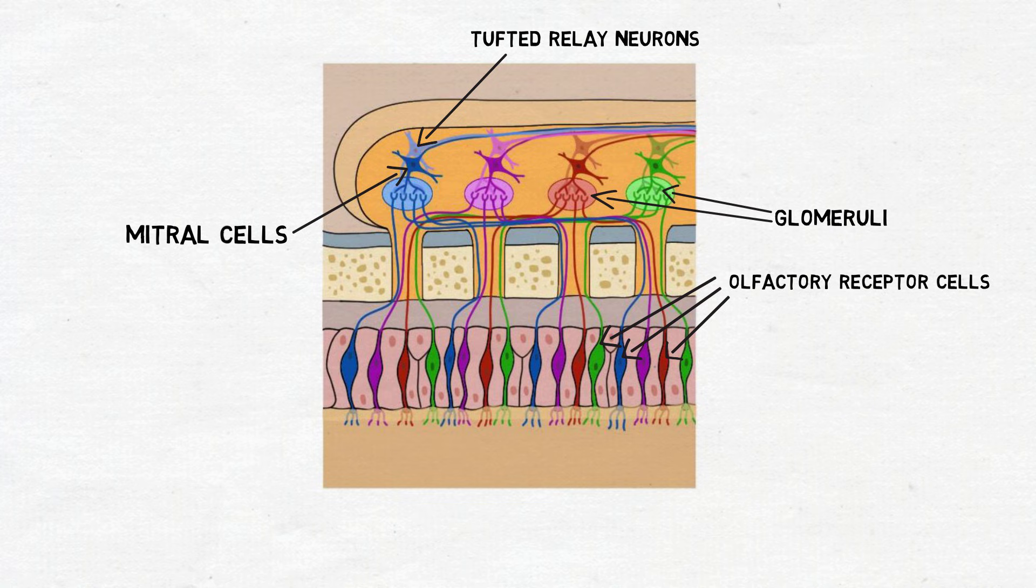Both of these cells project into the olfactory tract, a bundle of fibers that carries olfactory information to the olfactory cortex, where most olfactory processing occurs.